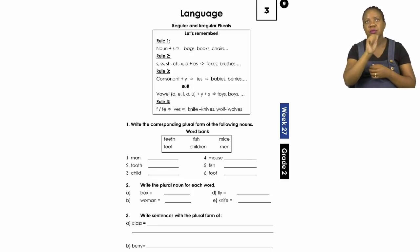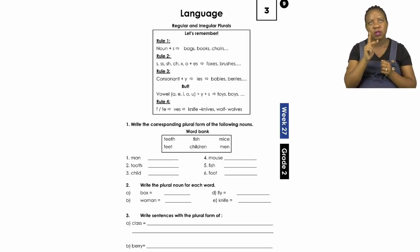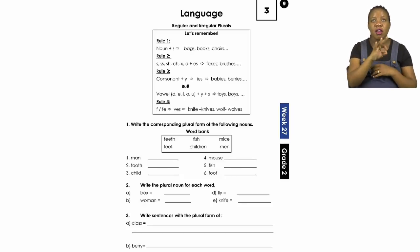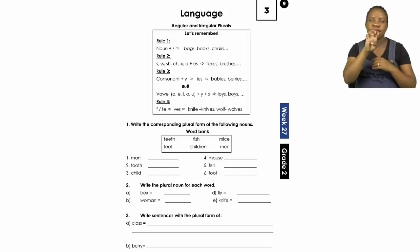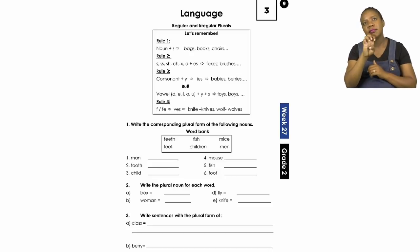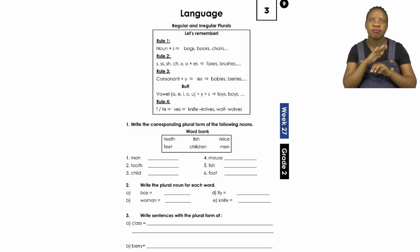The last rule is that if there is an F or F-E, we remove it and put V-E-S, like knives and wolves. These are the rules that are going to help us today. Remember to look back at them before you answer. Let's take a look at number one using the word bank. We have the words man, tooth and child — we need to find the plural. Remember: singular means one, plural means many.